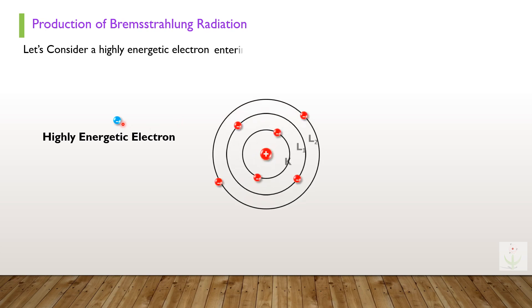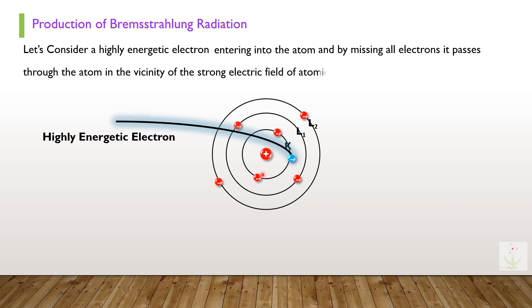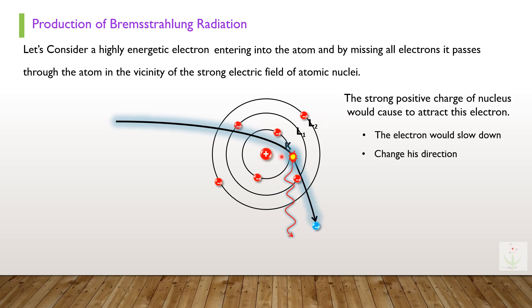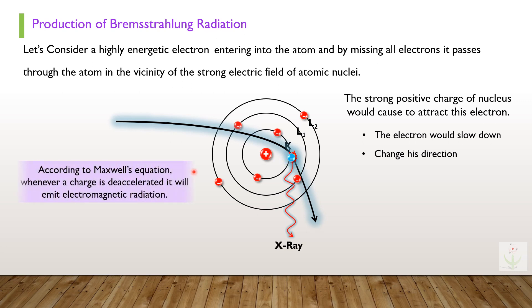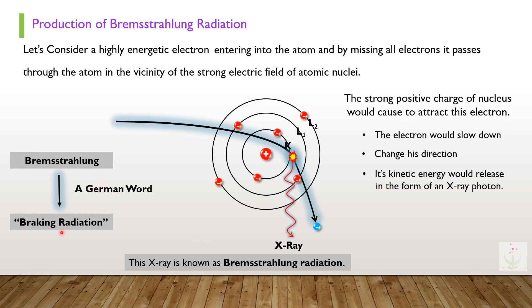To understand Bremsstrahlung radiation, consider a highly energetic electron entering into an atom, missing all the electrons, and passing through in the vicinity of the strong electric fields of the atomic nucleus. This strong positive charge of the nucleus attracts the electron, causing it to slow down and change its direction. According to Maxwell's equations, whenever a charge is decelerated it will emit electromagnetic radiation, thus releasing its kinetic energy in the form of an X-ray photon. This X-ray is known as Bremsstrahlung radiation — a German word meaning 'braking radiation.'